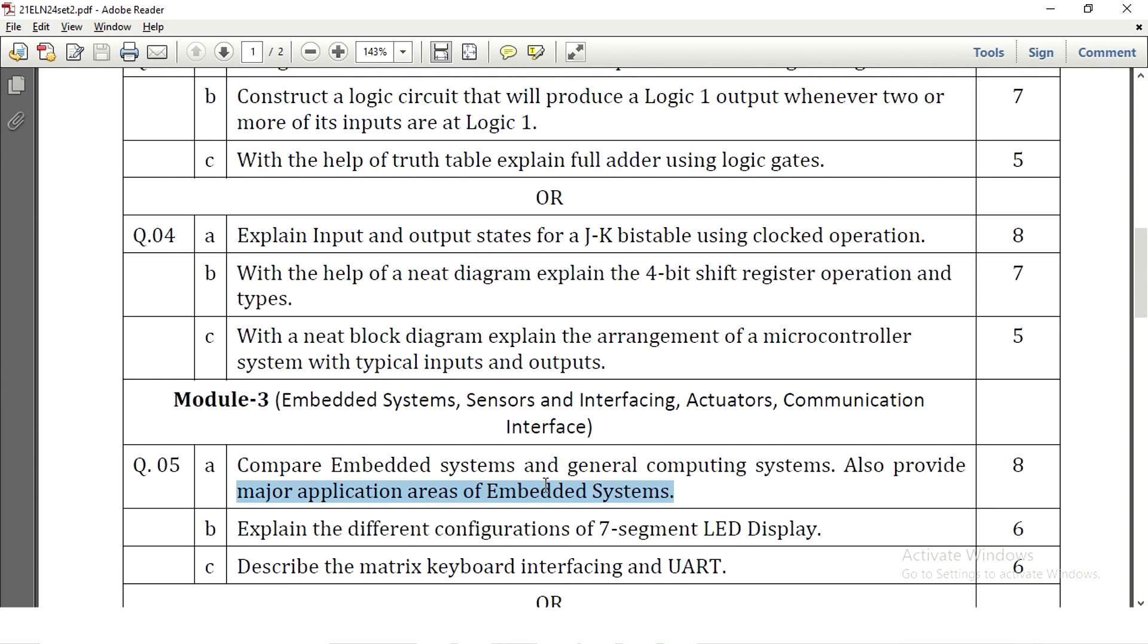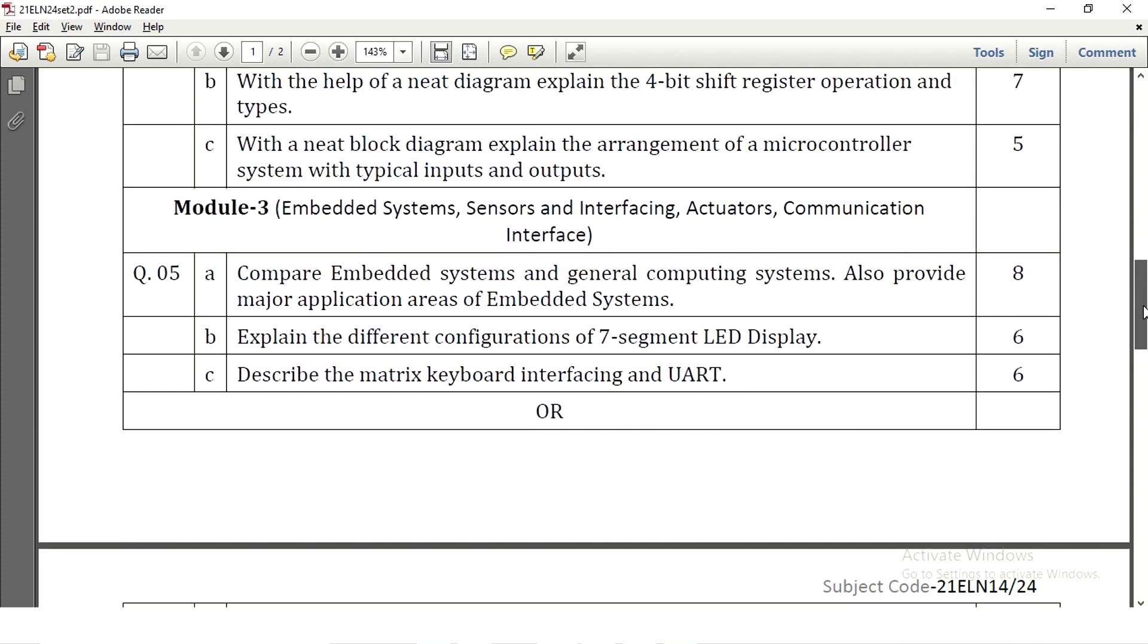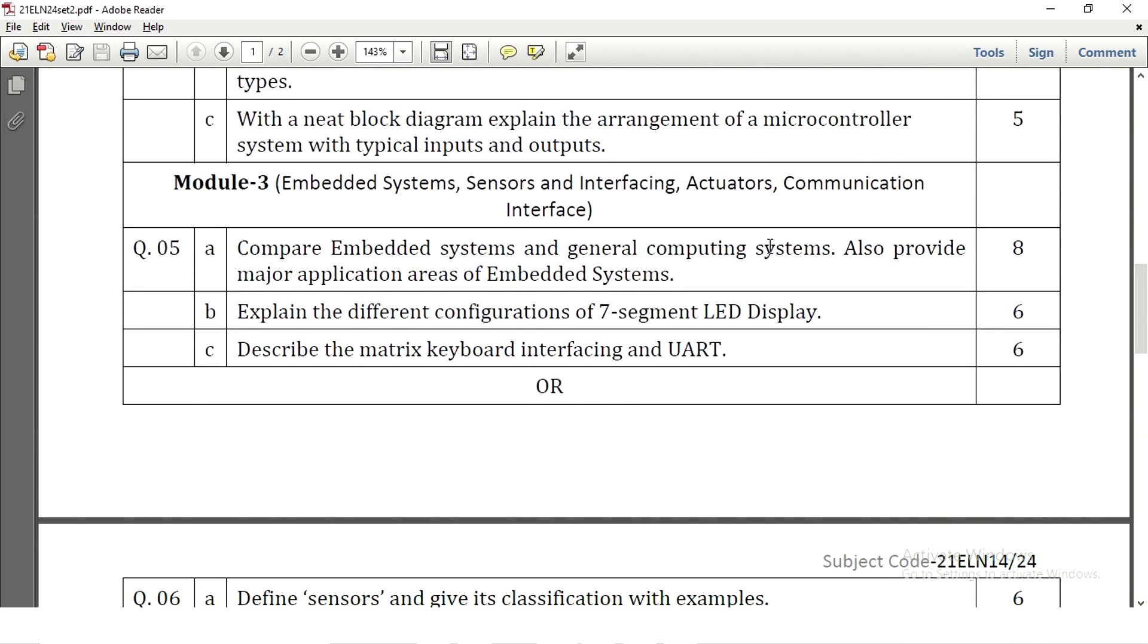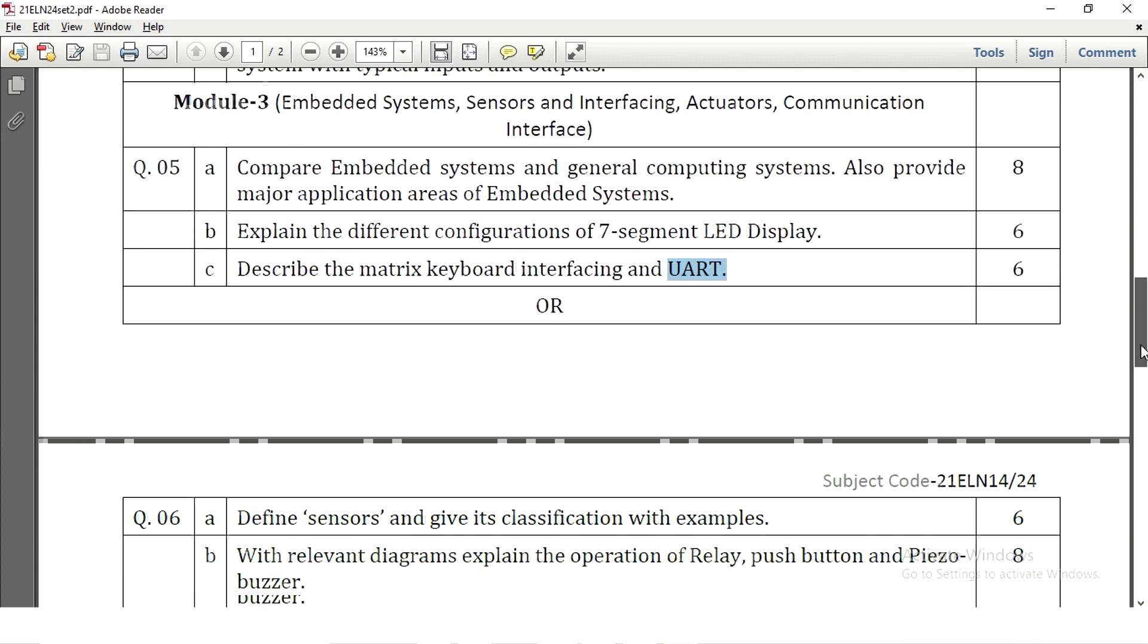Compare the embedded system and general purpose computing system. Also provide major application areas of embedded system. This question carry 8 marks. Here we can split it as 6 plus 2. 6 marks will be or 5 marks will be for the comparison and 2 marks will be for the applications. Explain different configurations of 7 segment LED display. So there are two configurations. You can explain the 7 segment display how it will be connected for 6 marks and how LED is going to display the numbers also you can write. Describe matrix keyboard interfacing and UART. So matrix keypad circuit need to be written and how the key will be pressed is analyzed. In brief you can explain here since UART also included with this question for 6 marks.